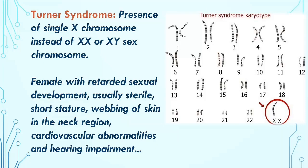In sex chromosomal aneuploidy, Turner syndrome involves a monosomy where there is a decrease in the number of sex chromosomes — only a single X chromosome is present instead of the normal XX or XY. Affected females have retarded sexual development and are usually sterile. They also have short stature with webbing of skin in the neck region, along with cardiovascular abnormalities and hearing impairment.